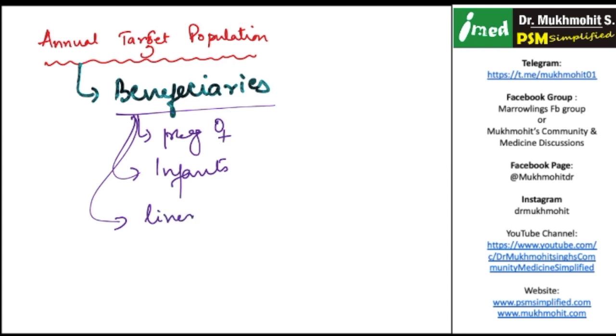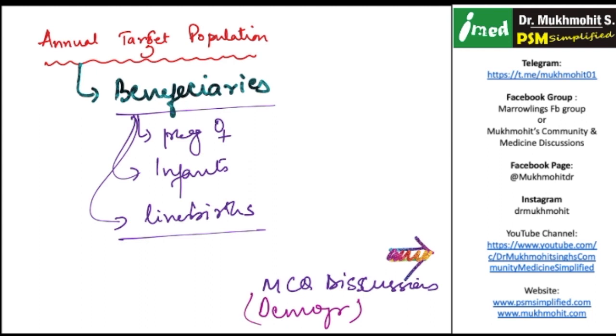To know more on how to find out the eligible beneficiaries, you can please visit this YouTube channel, that is Mohit's Community Medicine Simplified. In this YouTube channel there is a different playlist. You can find a playlist by name of MCQ discussions, and within that playlist you need to search for the demography module where you can find out how to find out the eligible beneficiaries.